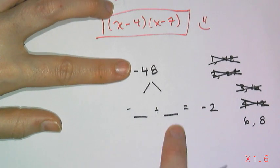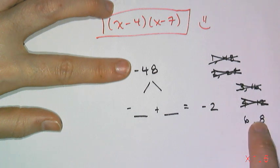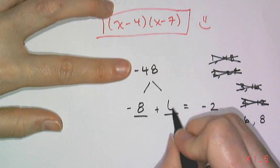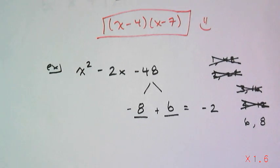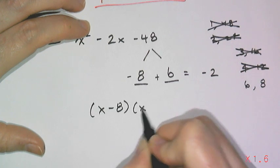And then I have 6 and 8. And since 1 is negative and 1 is positive, I'm looking for a difference of 2. Well, 6 and 8 have a difference of 2. But I'm looking for negative 2, which means it has to be minus 8 and then plus 6. And so then x squared minus 2x minus 48 is going to be x minus 8 times x plus 6.